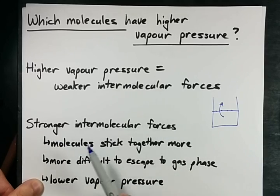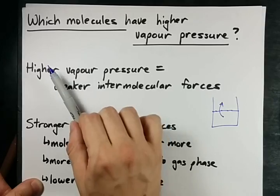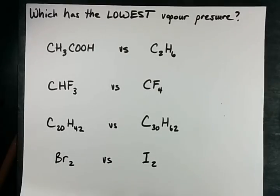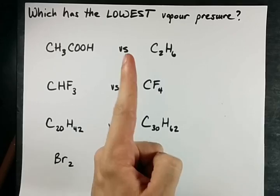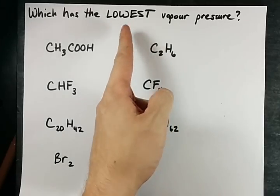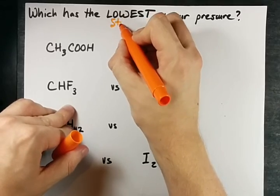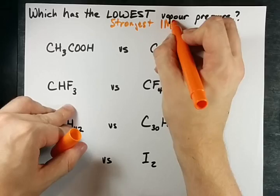Stronger intermolecular forces mean the molecules stick together more, which means it's more difficult for them to escape to the gas phase, which gives them a lower vapor pressure. If we're looking for higher vapor pressure, we need the weakest intermolecular forces. So let's circle the molecules with the lowest vapor pressure, which means highest or strongest intermolecular forces.